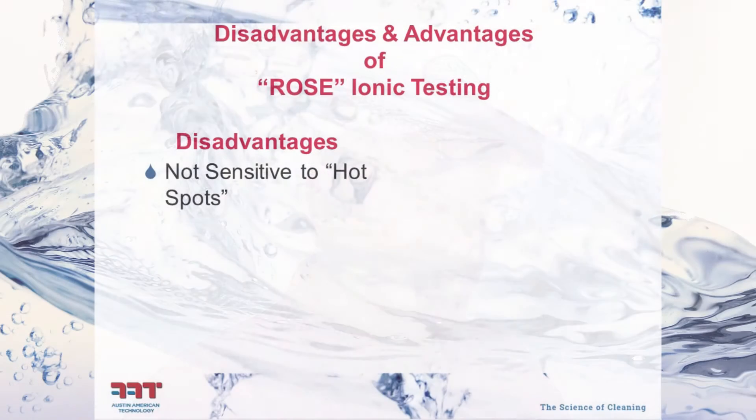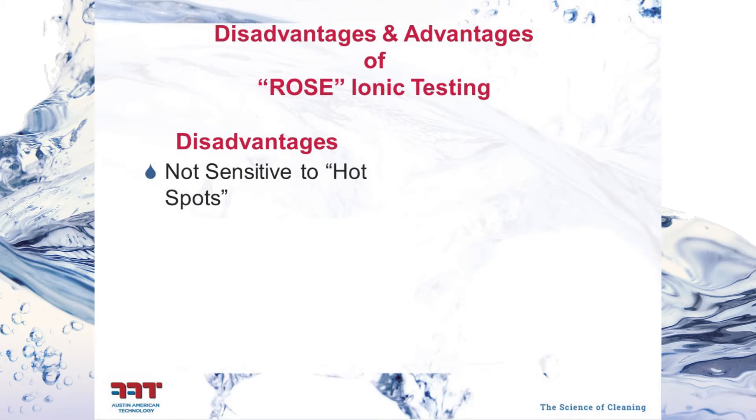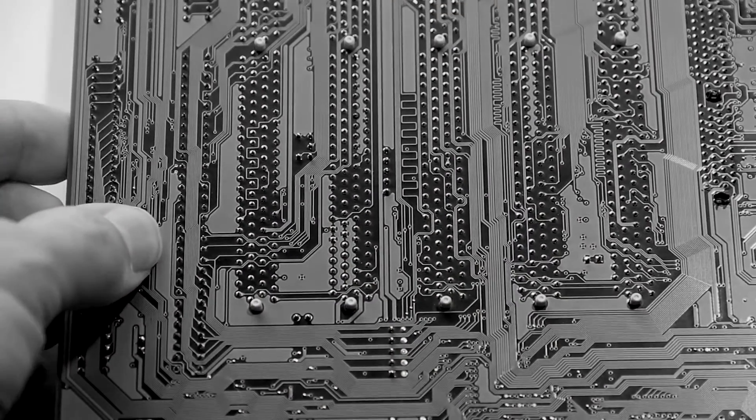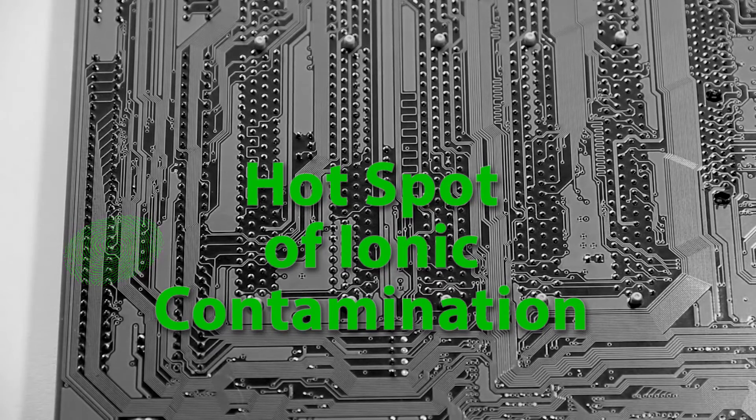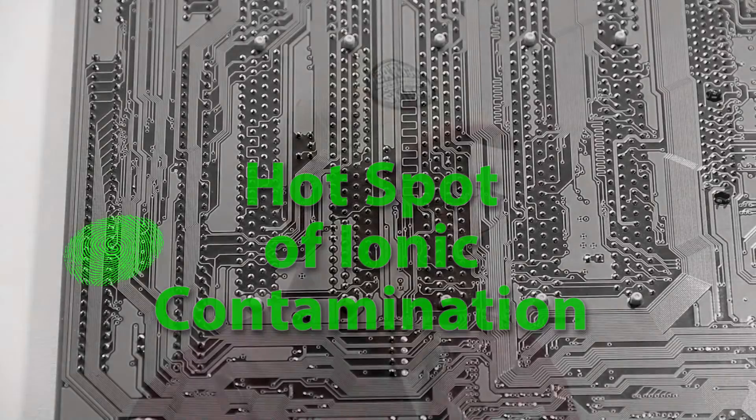ROSE testing has both benefits and limitations. One limitation is that it's insensitive to hot spots. If you had lunch, came back, didn't wash your hands thoroughly, and touched one spot on a circuit board, that could deposit enough ionic contamination on that one spot — in a critical area — to give rise to a dendrite. However, because the average value across the board would not exceed the limit, the test would be insensitive to that one little hot spot.